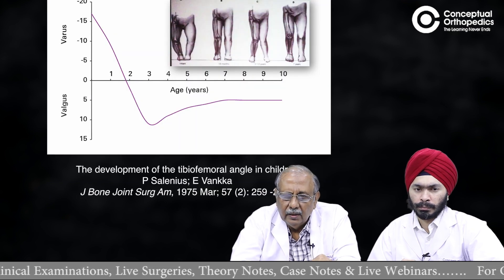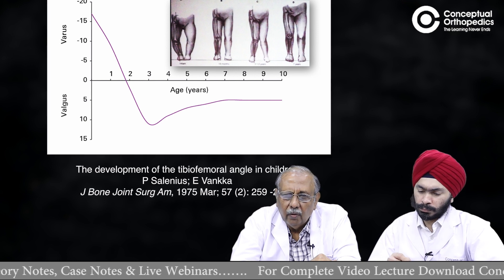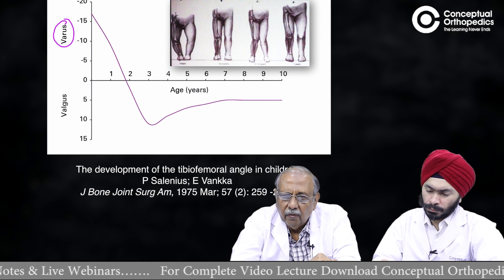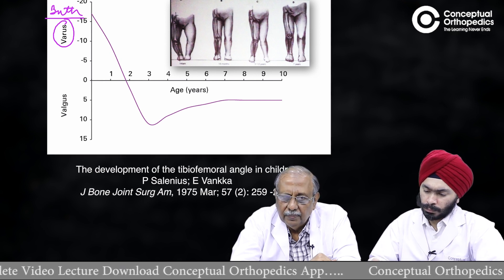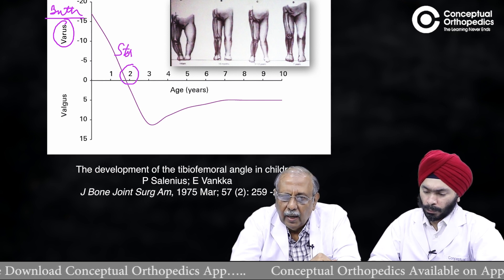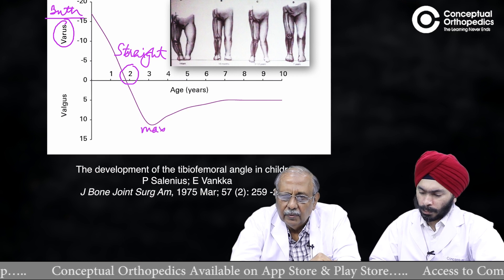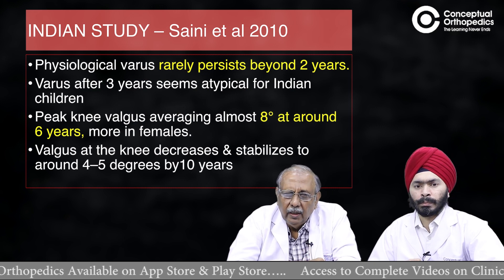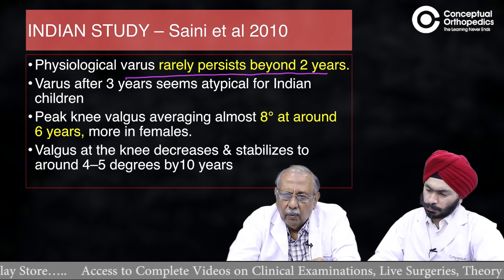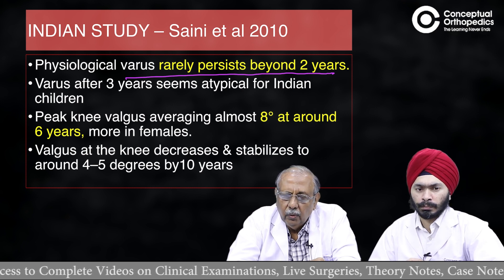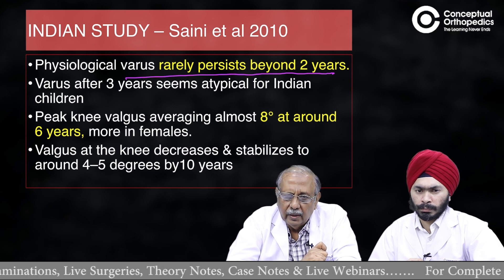Regarding physiological versus pathological — this chart from the study by Selenius and Venka is very important. When a child is born, they have around 15 degrees or more of varus. As the child grows, the varus disappears and the limb becomes almost straight by two years of age. It then shifts to genuvalgum, which is maximum around age three, then slowly decreases until the child becomes normal by around age six or seven. For Indian children, studies show physiological varus rarely persists beyond two years.